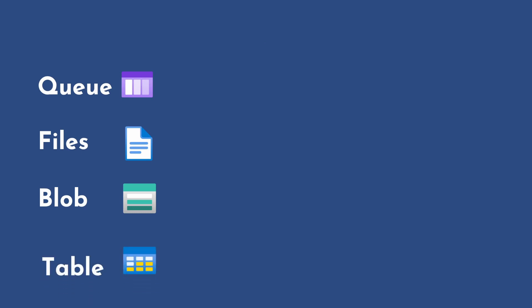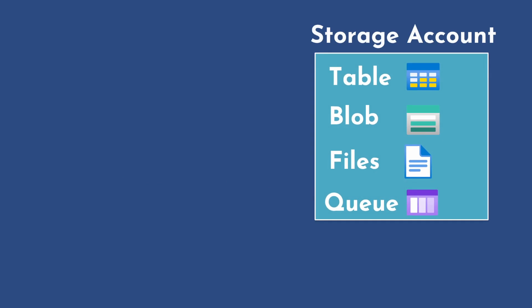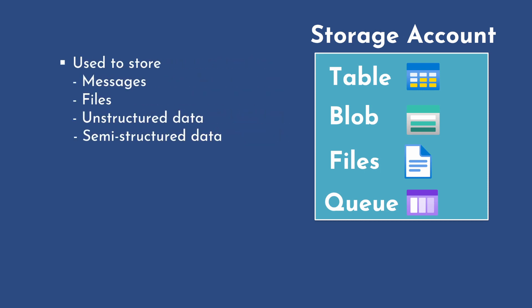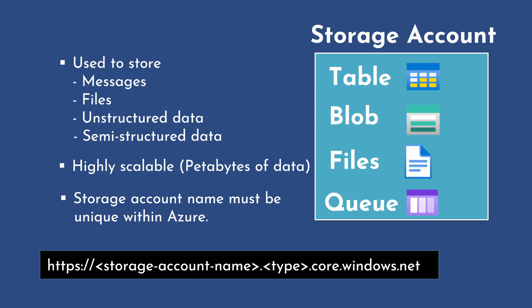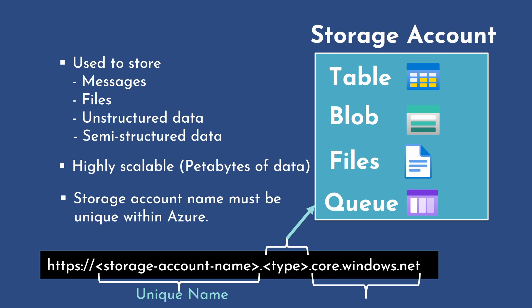We have seen Azure queue storage, Azure file storage, Azure blob storage, and Azure table — but all these storages are part of a bigger storage service called the storage account. A storage account can have multiple tables, blobs, files, and queues. It is used to store messages, files, unstructured data, and semi-structured data. It is highly scalable and can hold petabytes of data, and the storage account name must be unique within Azure. A sample endpoint consists of the unique storage account name, followed by the service type (table, blob, file, or queue), followed by the common Azure domain suffix.